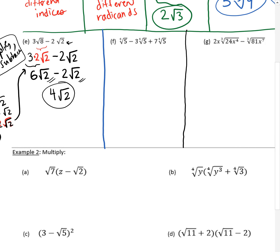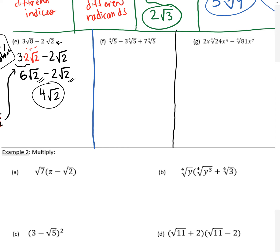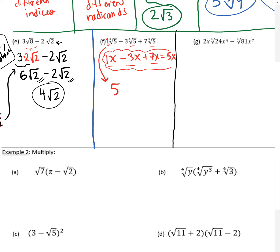Part F: we have a fourth-root of 5, another fourth-root of 5, and another fourth-root of 5. They're all like terms. This is like having x minus 3x plus 7x, where the coefficients are 1, negative 3, and 7. Combining coefficients: 1 minus 3 plus 7 is 5. So the result is 5 times the fourth-root of 5. The radicand and index stay the same — don't change those.